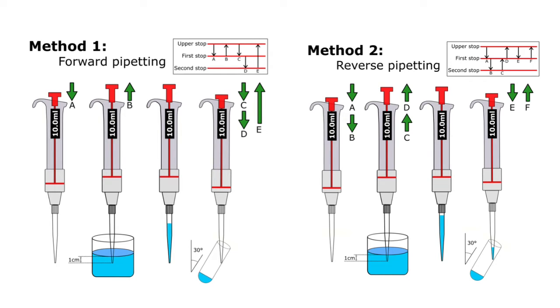Next, push the pipet to the second stop, D, while sliding the pipet tip against the walls of the container. Release the plunge button at this point to return it to the uppermost position, E. You're done.